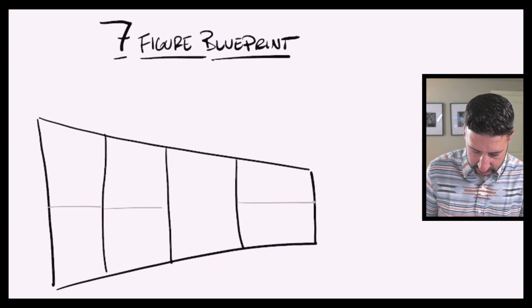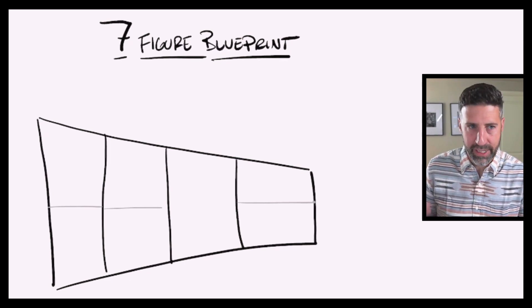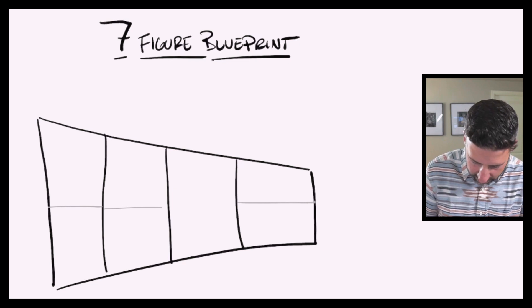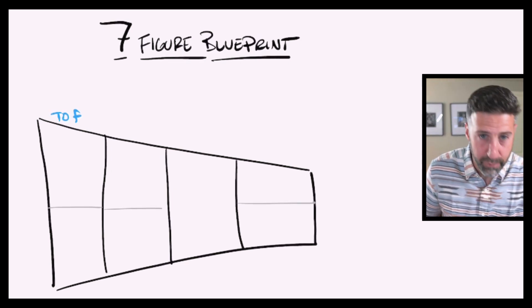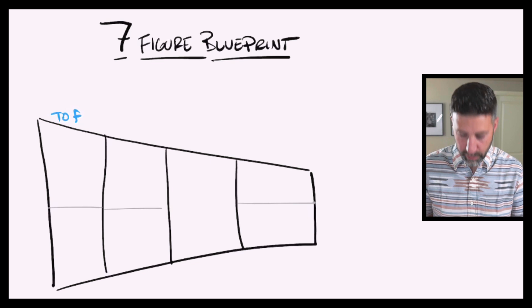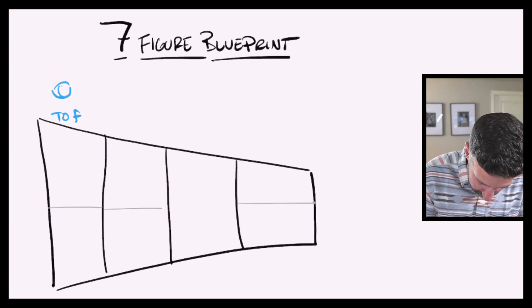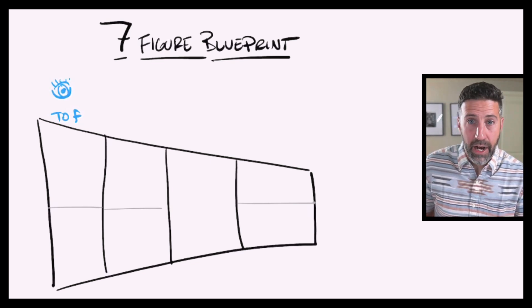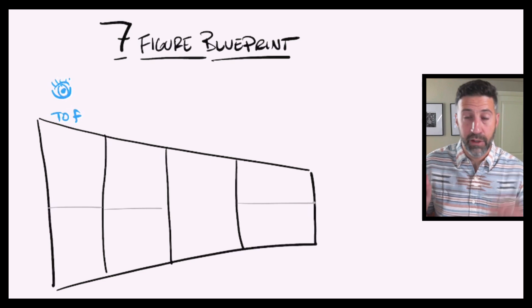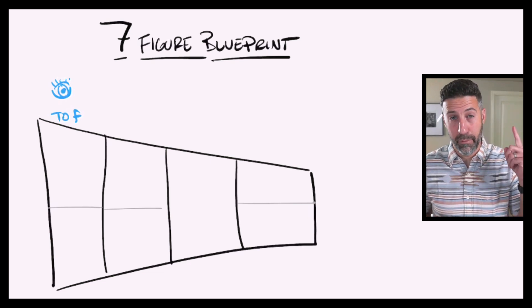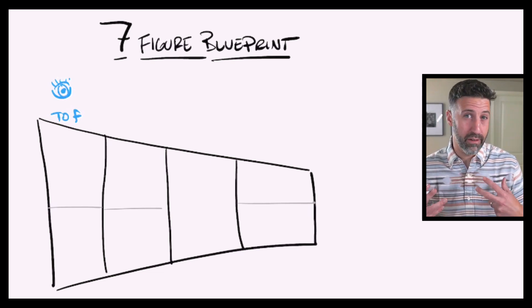The first one is we need a top of funnel marketing asset. This is where we're going to go get in front of more eyeballs. And I like to look at it as having one that we focus on from a paid perspective and one that is an organic channel.